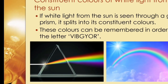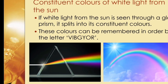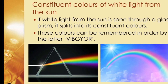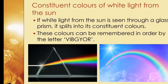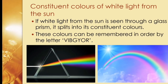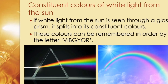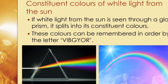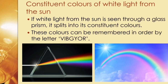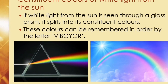The white light from the sun is made up of 7 colors. When this light passes through a prism, it splits into its constituent colors. These colors can be remembered in order by VIBGYOR. The formation of a rainbow is because of this splitting of sunlight.